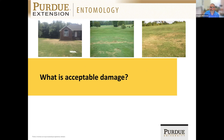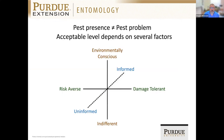That naturally leads to the question of what is an acceptable level of damage. That's going to vary depending on your own personal ideas as well as your clients' and stakeholders' ideas. The pest presence does not necessarily equal a pest problem — it's okay if we see pests, but once populations rise to a certain level they can become a problem. That acceptable level of damage is going to depend on a lot of different factors.